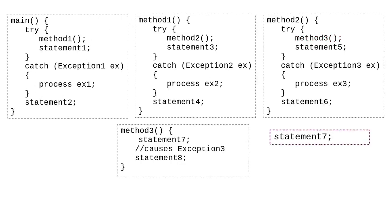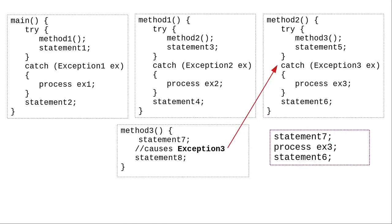What happens if method 3 does statement 7 and then causes an exception of type exception 3? Method 3 immediately terminates. Statement 8 will never happen. Method 3 doesn't have a try-catch, so the exception gets thrown to its caller, method 2. Method 2 can catch exception 3, and it will process that exception and continue to statement 6.